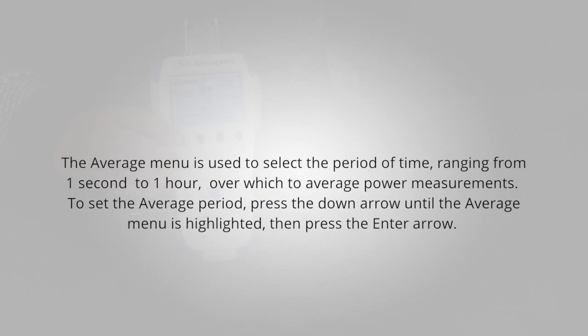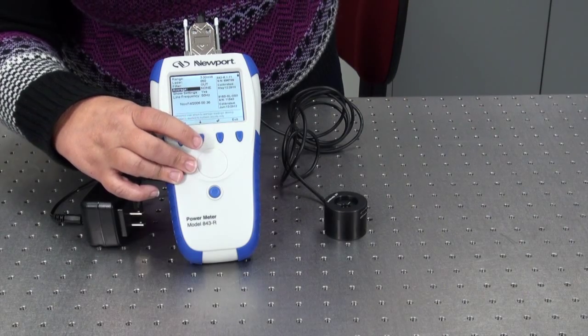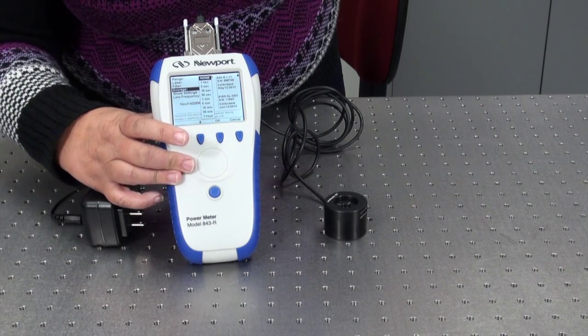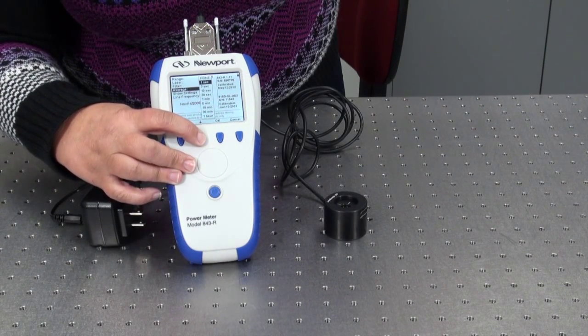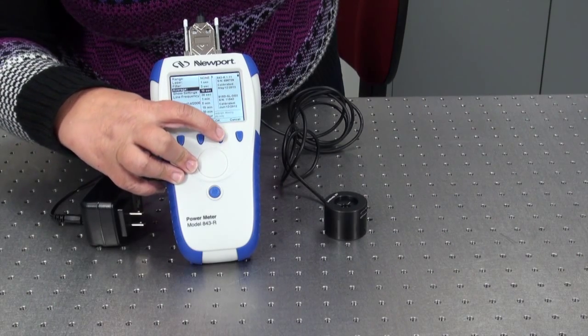The average menu is used to select the period of time ranging from one second to one hour, over which to average the measurements when measuring power. To set the average period, press the down arrow until the average menu is highlighted. Then press the enter arrow. Use the down arrow to scroll through the time period selections until you reach the one you desire. Press OK.